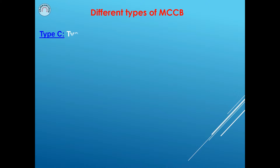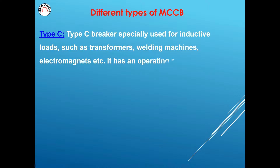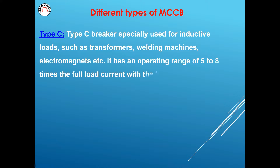Type C. Type C breakers are specially used for inductive loads, such as transformers, welding machines, electromagnets, etc. It has an operating range of 5 to 8 times the full load current with a time delay of 0.04 to 5 seconds.